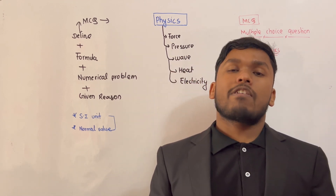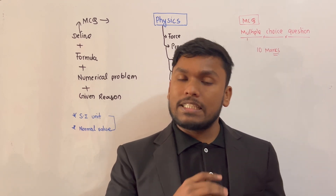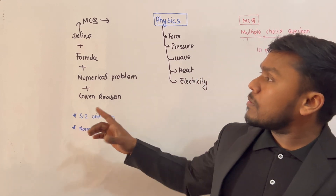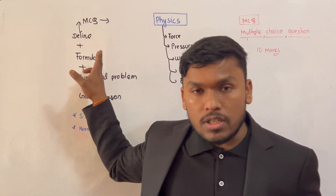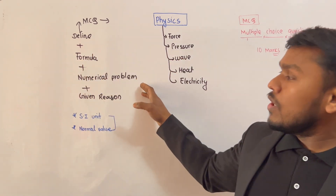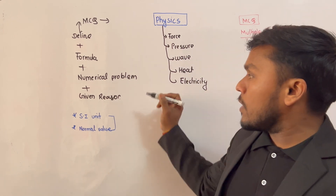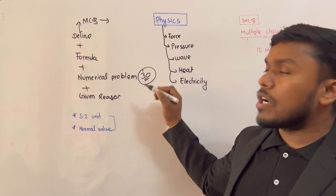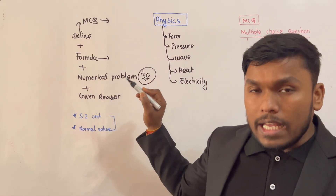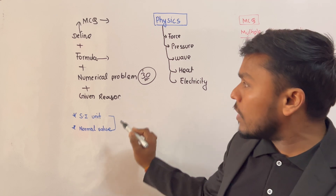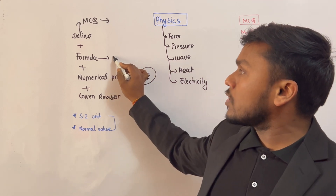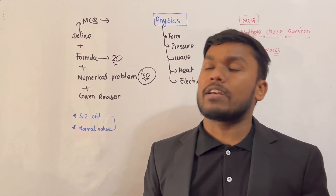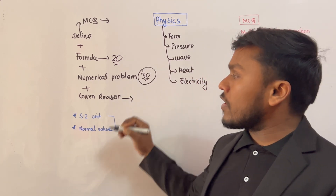This is a numerical problem — you can solve it. Because physics is a complete theory, you have to have clear definitions. The formula needs to be clear so you can use it to solve numerical problems. In each chapter, around 6 topics means 30 questions. The formula approach is very helpful.